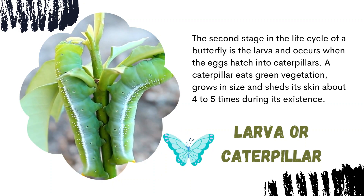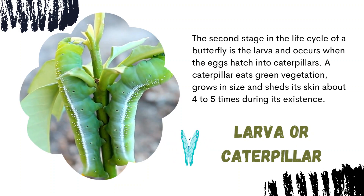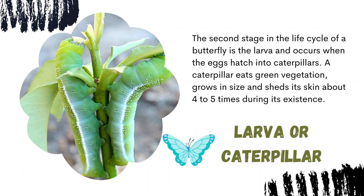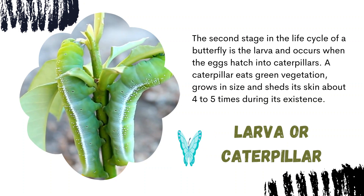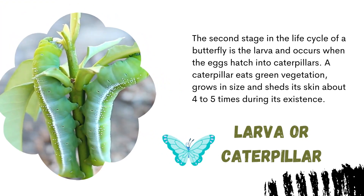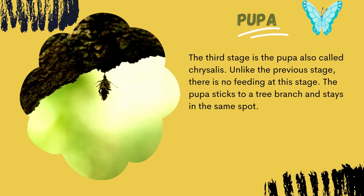The second stage in the life cycle of a butterfly is the larva, and occurs when the eggs hatch into caterpillars. A caterpillar eats green vegetation, grows in size, and sheds its skin about four to five times during its existence. They are known to grow 100 times their initial size at this stage, depending on the species.